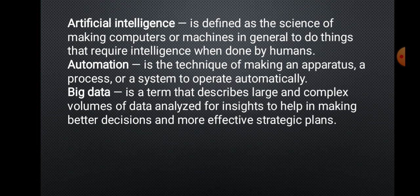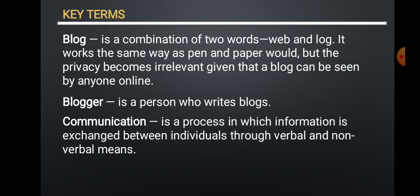Artificial intelligence is defined as the science of making computers or machines in general to do things that require intelligence when done by humans. Automation is the technique of making an apparatus, a process, or a system operate automatically. Big data is a term that describes large and complex volumes of data analyzed for insights to help in making better decisions and more effective strategic plans. Blog is a combination of two words: web and log. It works the same way as pen and paper would, but privacy becomes irrelevant given that a blog can be seen by anyone online. A blogger is a person who writes blogs.